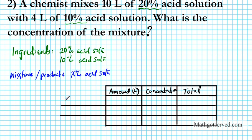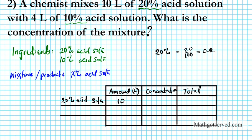My ingredient number one is the 20% acid solution. The amount of the 20% acid solution is 10 liters. What is 20% in decimal form? 20% in decimal form is 20 over 100, which is 0.2. So the concentration is 0.2, and then the total is going to be 10 times 0.2.